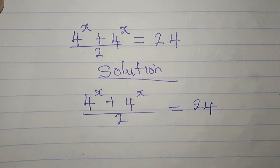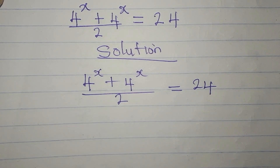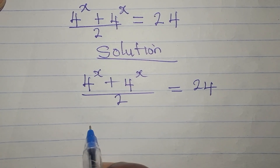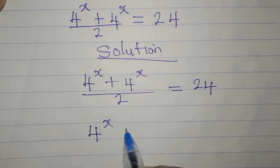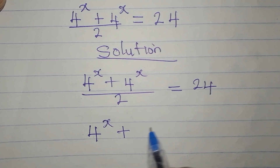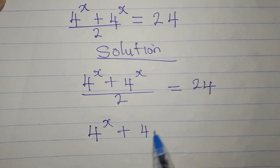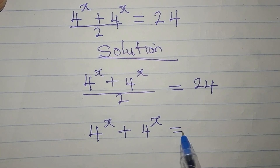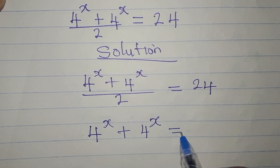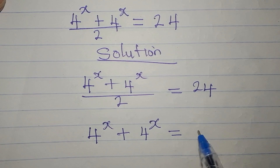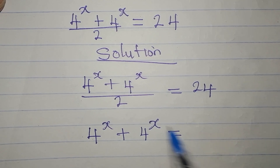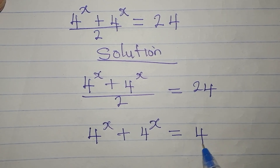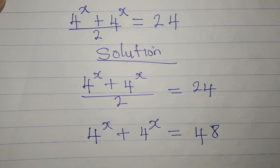The first step is to cross-multiply so that 4 to the power of x plus 4 to the power of x will be alone, and at the same time equal to 2 times 24, which gives 48.